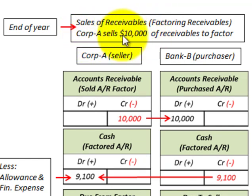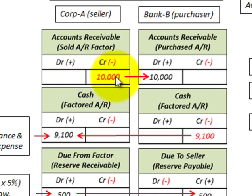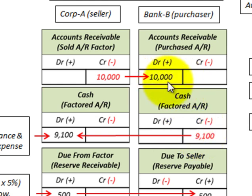For example, Corporation A is going to sell $10,000 of the receivables they had for the year. They collected $100,000 on their accounts receivable and are selling off $10,000 of these, at the end of the year for easy calculation. Corporation A, the seller, will credit or reduce their accounts receivable. Bank B buys these receivables, debiting their accounts receivable account. Bank B pays Corporation A $9,100 — less than the $10,000 face value. Bank B credits cash for $9,100, and Corporation A debits cash for $9,100.